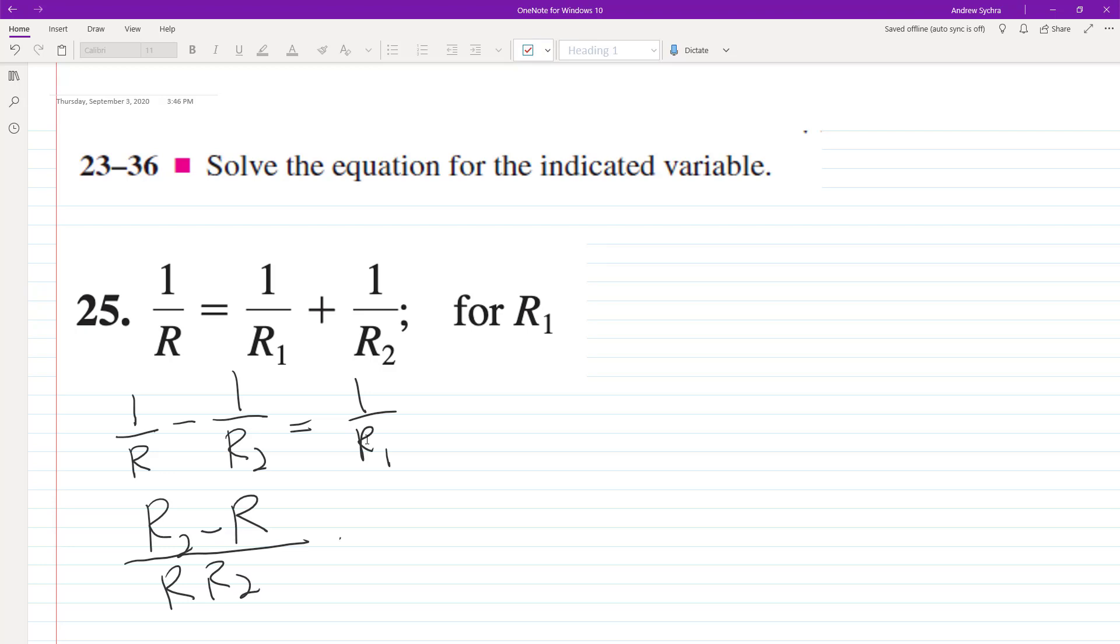And the reason I did this, I'll show you, is because now I can reciprocate both sides. So we end up with, and I'm going to write the right side first, R sub 1 is equal to R R2 over R2 minus R.